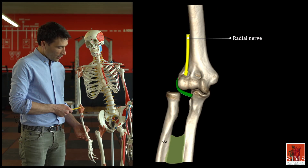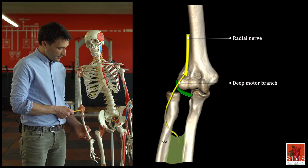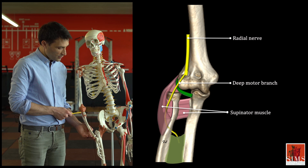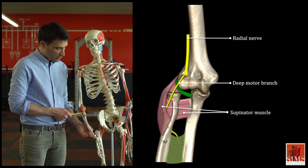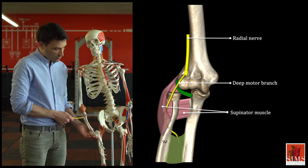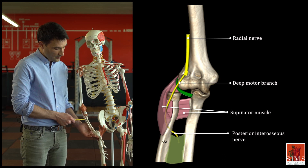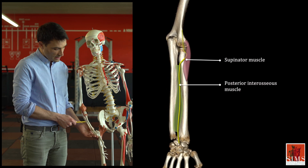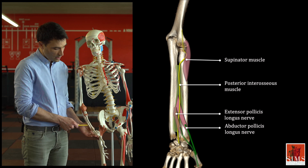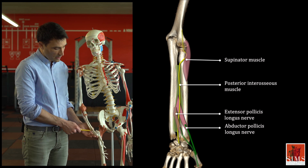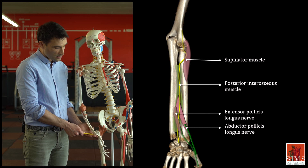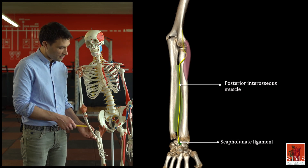There it splits into two branches. The posterior motor branch goes around the radial neck between the heads of the supinator muscle — what we call the radial tunnel — to the posterior surface of the forearm where it becomes the posterior interosseous nerve. It continues between the extensor pollicis longus and abductor pollicis longus muscles to reach the interosseous membrane in the lower third of the forearm and the dorsal side of the carpal bones and the dorsal bundle of the scapholunate ligament.